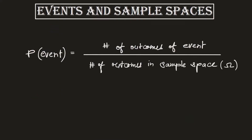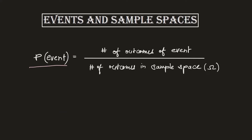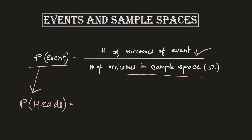Let's explore the idea of events and sample spaces. The probability of an event equals the number of outcomes for an event divided by the number of outcomes in a sample space. For example, the probability of getting heads when tossing a coin equals the number of outcomes of that event — since you will either get heads or tails, you cannot get both at once — divided by the number of outcomes in the sample space, which is heads and tails, equaling two.